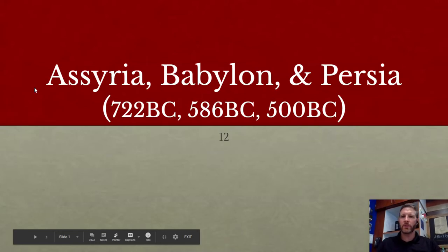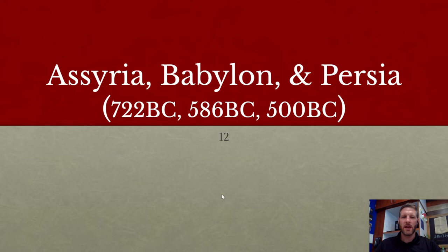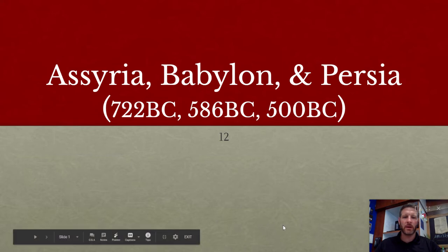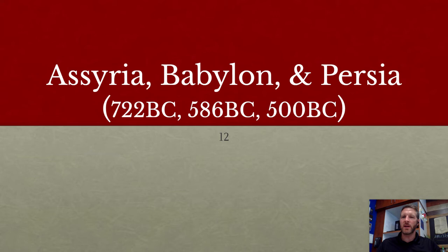World History students, we are on our last lecture for Unit 1 on the Ancient Near East, and we're going to be covering three of the other major civilizations that arise after the Kingdom of Israel. We're going to be talking about Assyria, Babylon, and Persia.